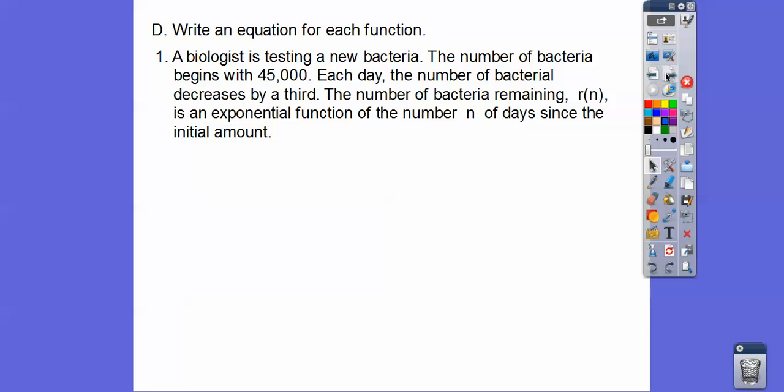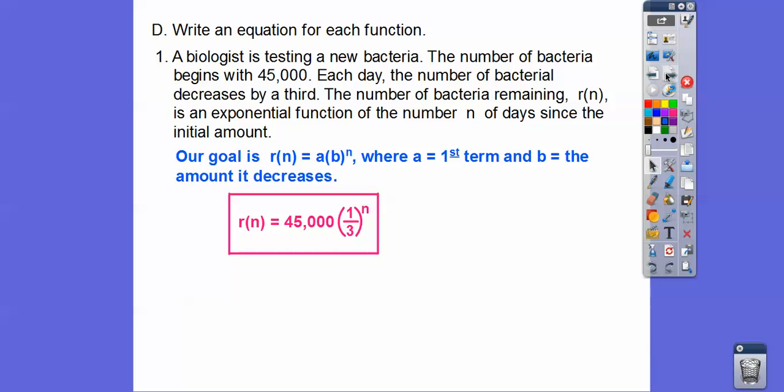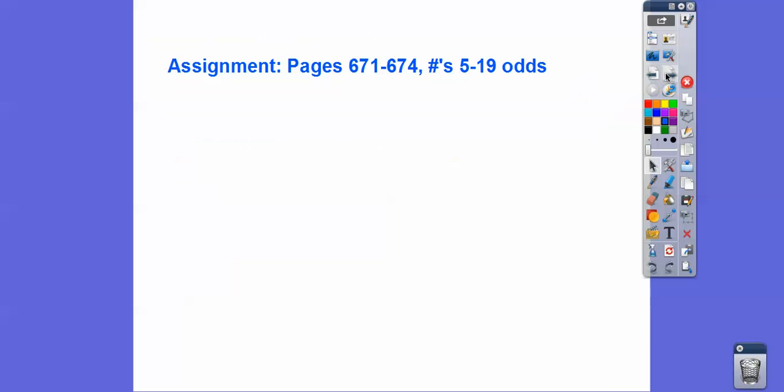A biologist is testing a new bacteria. The number of bacteria begins with 45,000. There's our first term. Each day, the number of bacteria decreases by a third. So the number of bacteria remains is the exponential function of the number of n days since the initial amount. So our r of n is going to be a times b to the nth, where our first term is a, and b is the amount it decreases. So there it is right there. If you guys are in my class, I'm going to assign you guys that. Take care. Thank you.